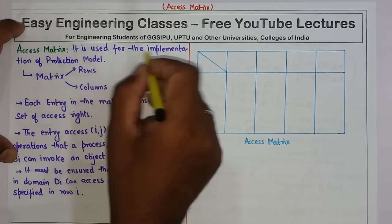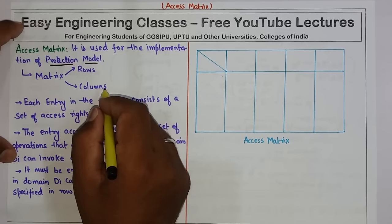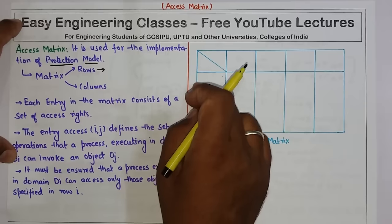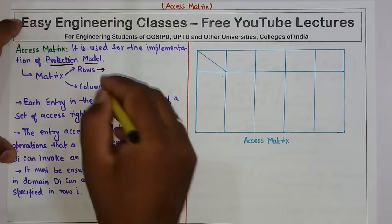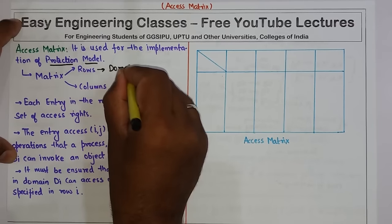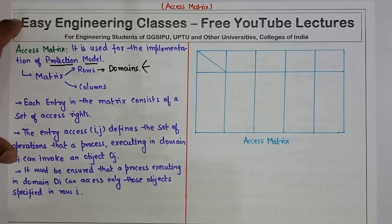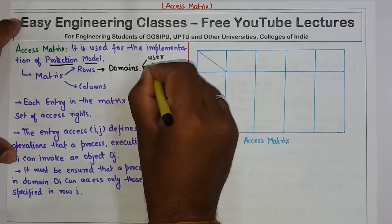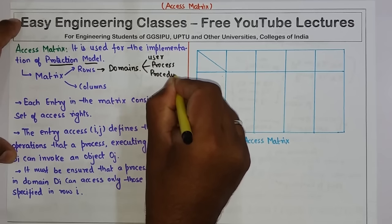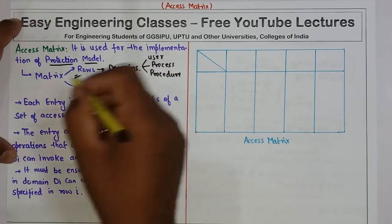The access matrix is used for the implementation of the protection model. In any matrix there are two different entries — one is rows and another is columns. The rows are used to represent the domains. We have seen in the previous video that there can be different kinds of domains: a user domain, a process domain, and a procedure domain. Any of those three kinds of domains are represented with the help of rows in the matrix.